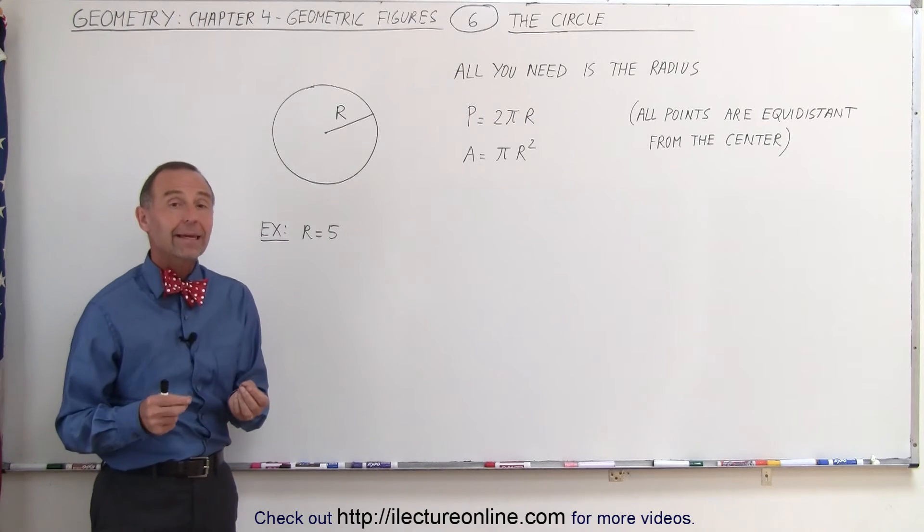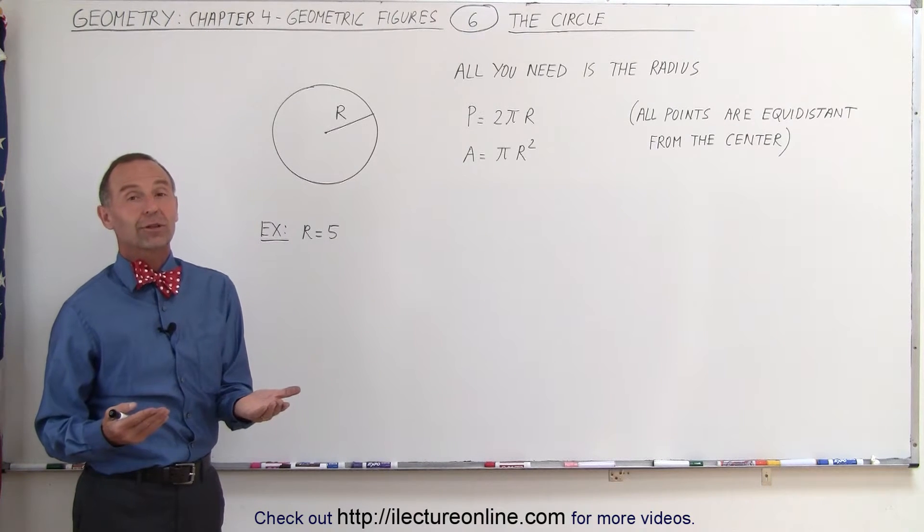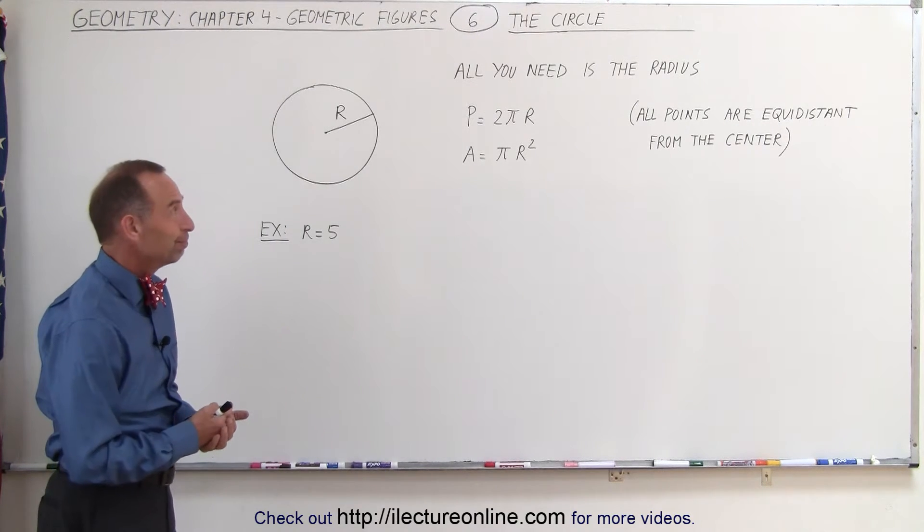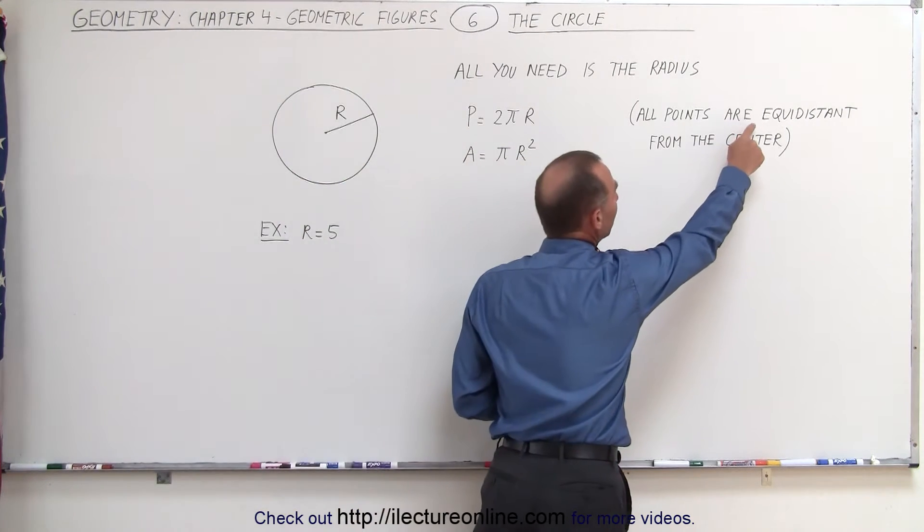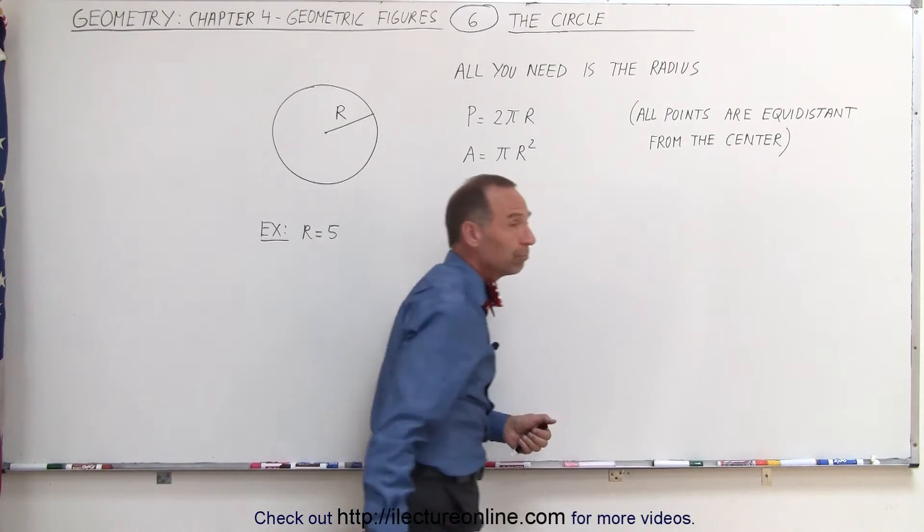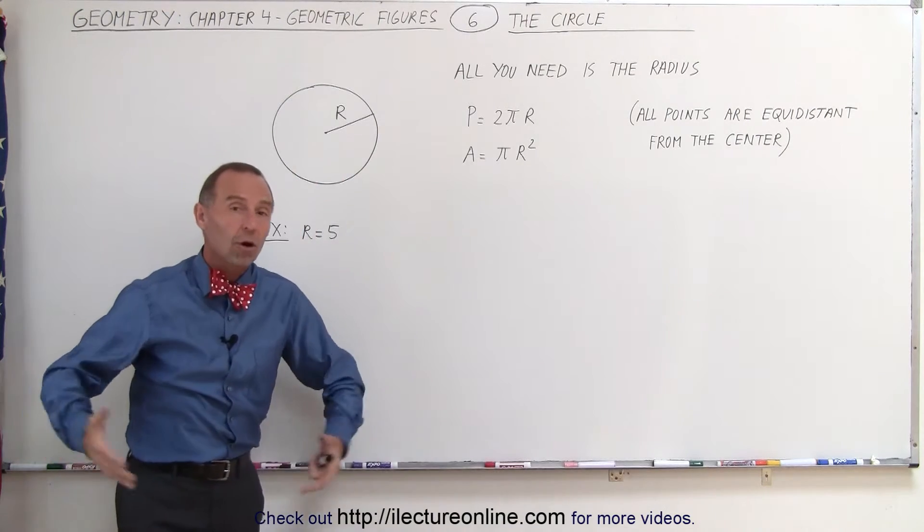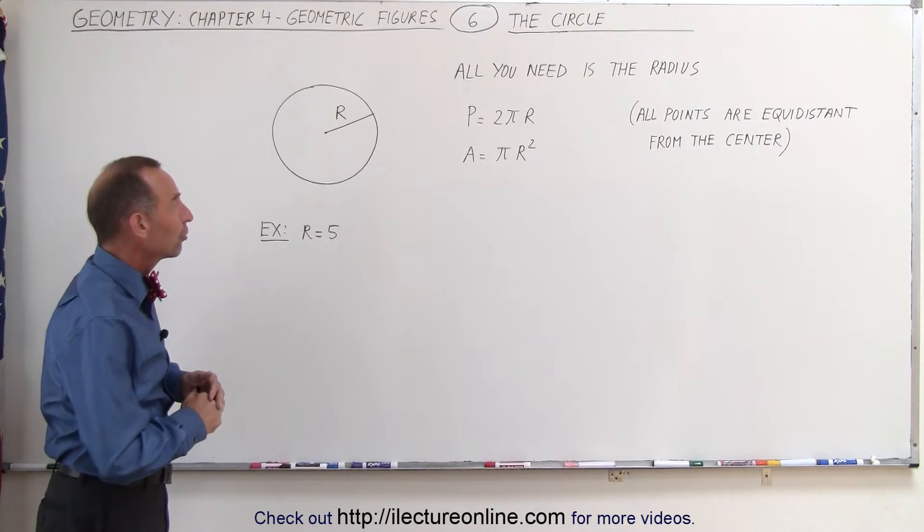It turns out the only thing that you need to know about a circle is the radius of the circle. That's because all the points on the circle are equidistant from the center. So the radius really defines all of what you need to know about the circle.